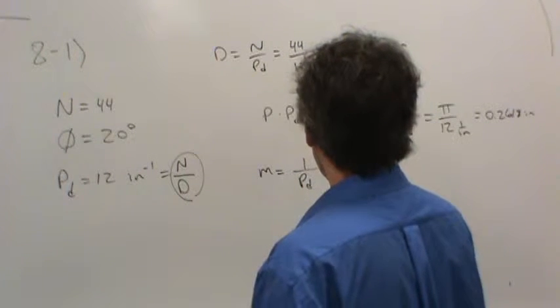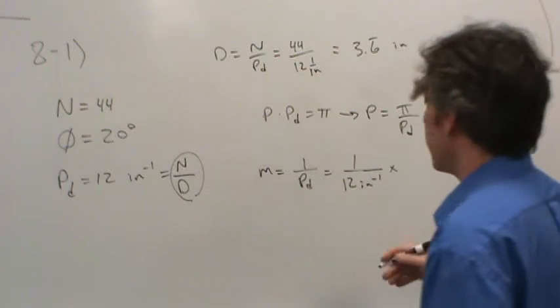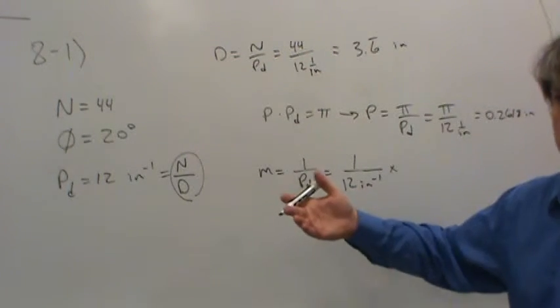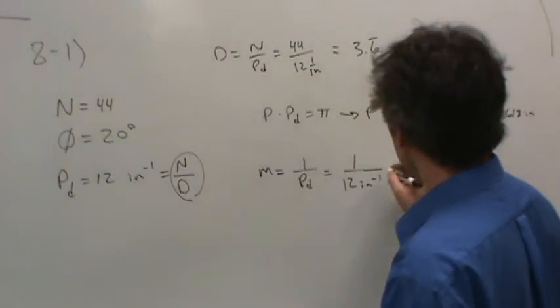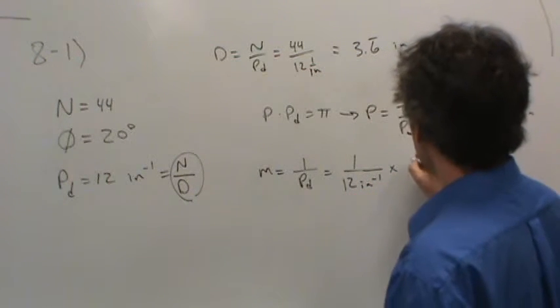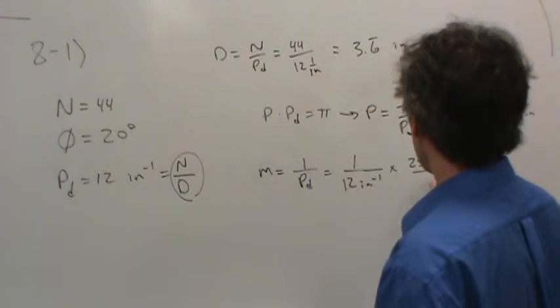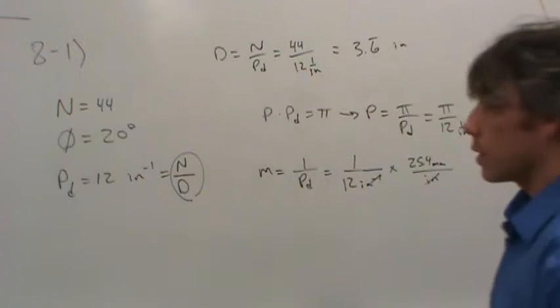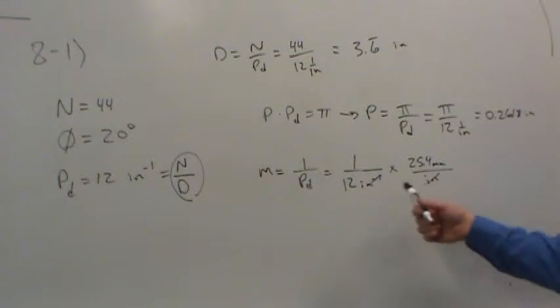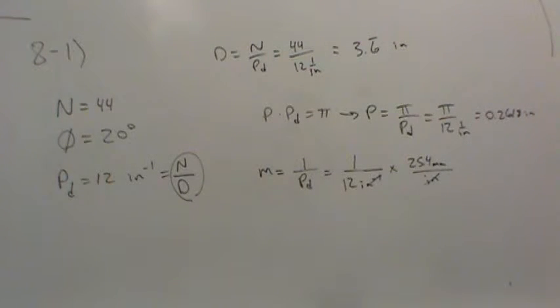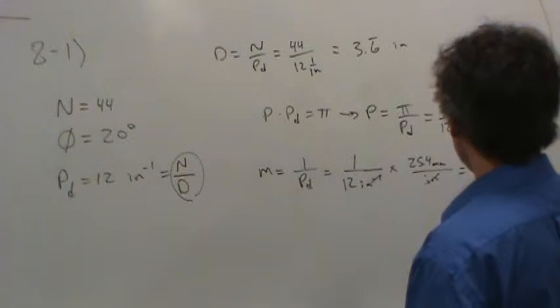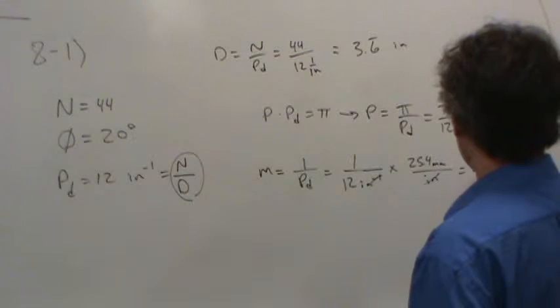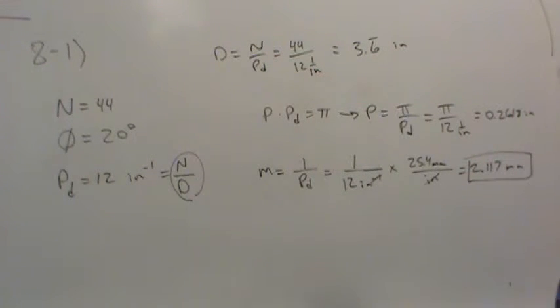But you have to use a conversion factor since the units here of the diametral pitch is 12 inverse inches. So this is 1 over 12 inverse inches. Now, what we have to do to actually get it in metric units, which is of course what we would want, is to convert the inches. So the units of this term are inches. So there's 25.4 millimeters per inch, and that takes care of the inch units. So basically, you take 25.4, divide it by 12, and that will give you the equivalent metric module. When I do it, I came up with 2.117 millimeters.